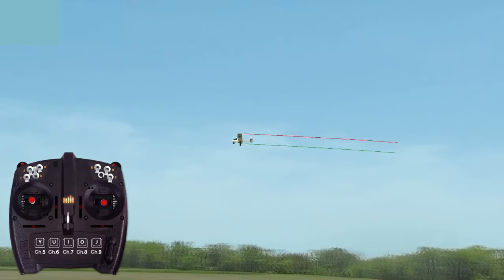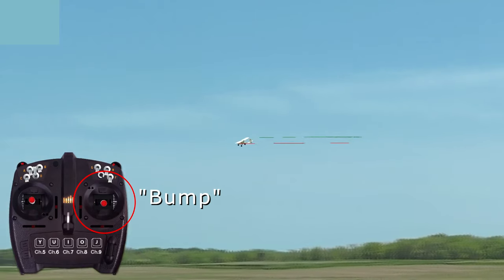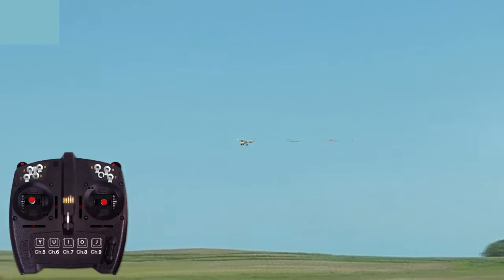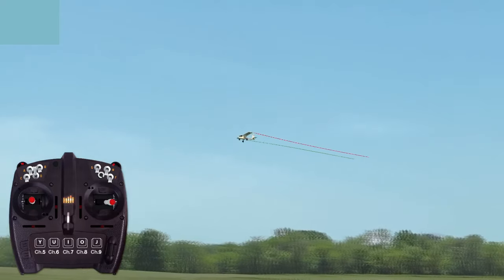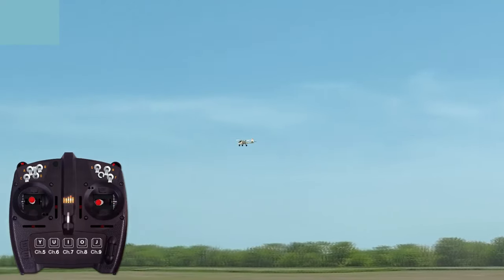Minor course adjustments are performed using a brief in-out aileron input to bank the wings slightly, causing the airplane to gradually drift in the direction of the slight bank. When you wish to return to a straight line, opposite aileron will be required to return the wings to level.